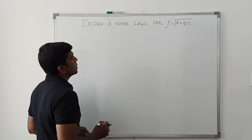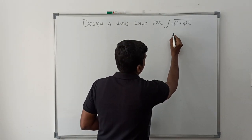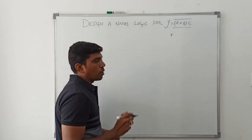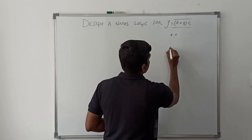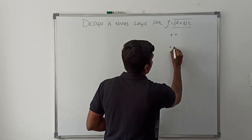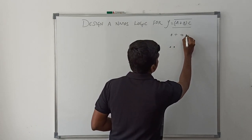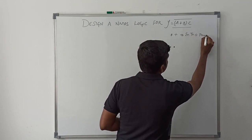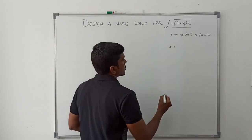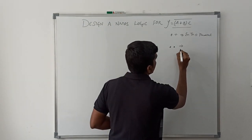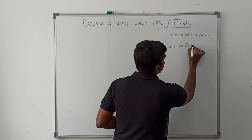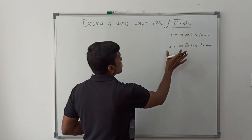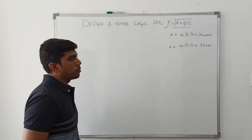Before drawing this NMOS logic circuit, I will first recall the rules. In this boolean expression we have two operators. The first operator is plus and the next operator is dot. The plus represents enhancement mode transistor connected in parallel, and the dot represents enhancement mode transistor connected in series. These two rules I am following to draw the NMOS logic.